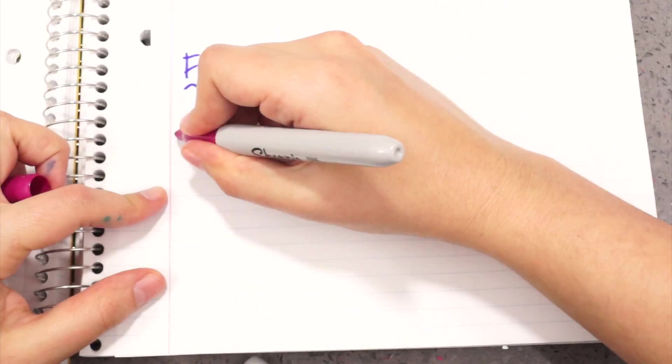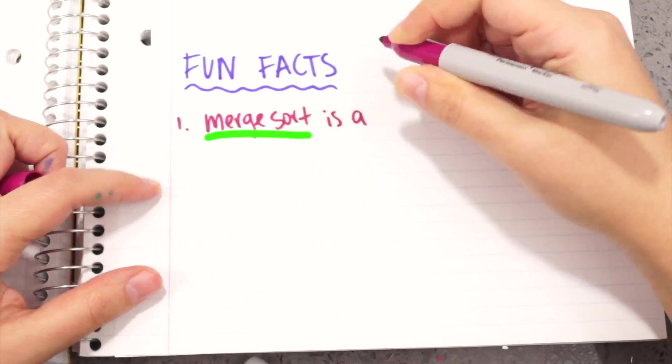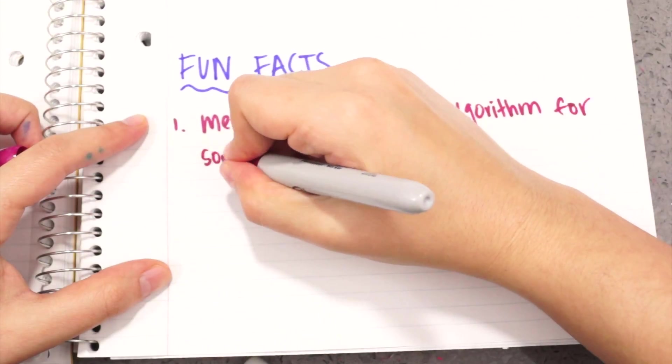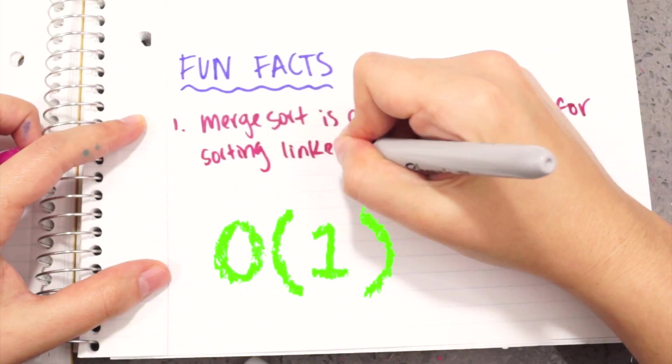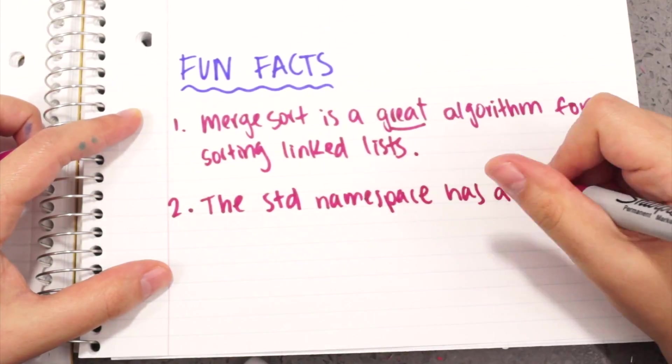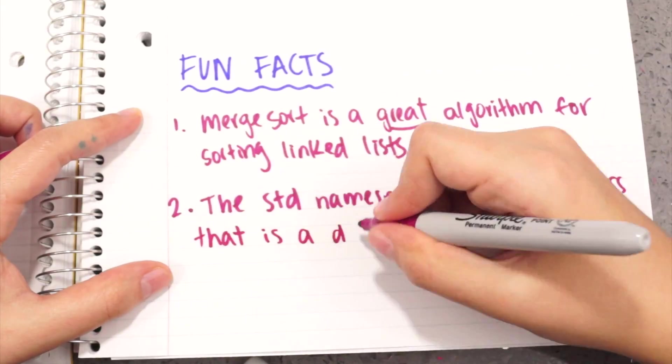Fun facts! One: MergeSort is a great algorithm for sorting linked lists because it does not rely on random access to elements, and the space complexity of MergeSort changes to O(1) when using linked lists. Two: The standard namespace has a list class, and it is a doubly linked list.